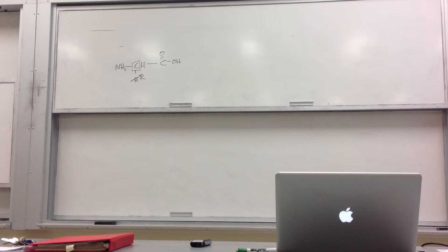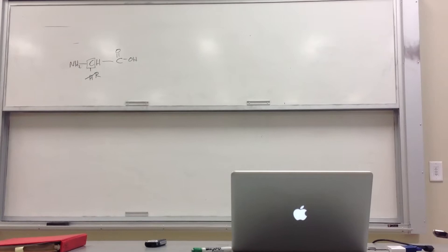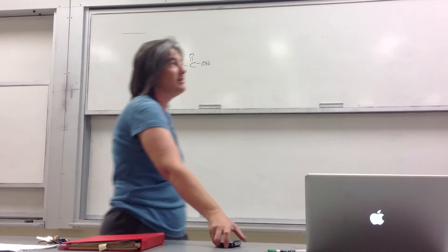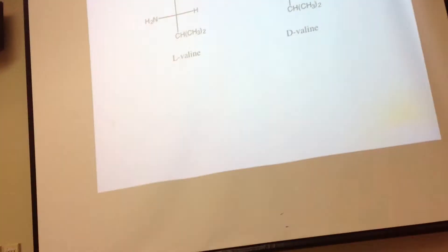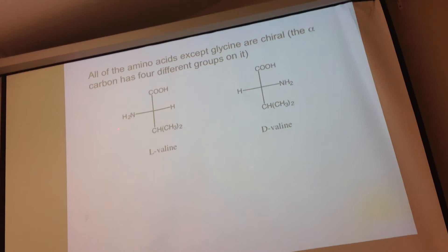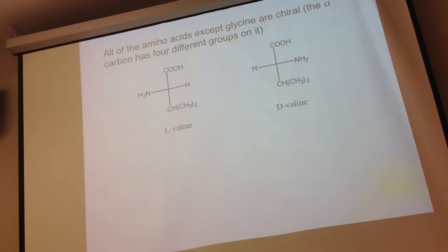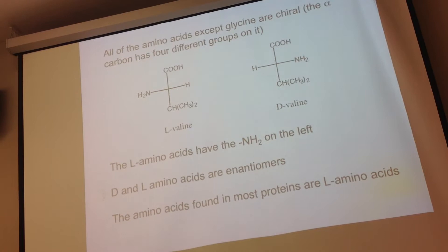An amino acid can exist as L or D enantiomers — analogous to sugar chemistry. If you draw a Fischer projection with the carboxylic acid at the top, and the NH₂ is on the left, it's L; if the NH₂ is on the right, it's D. The L and D forms are mirror images and enantiomers. Most proteins found in nature contain L amino acids — similar to how naturally occurring sugars are D sugars, though not quite as exclusive.